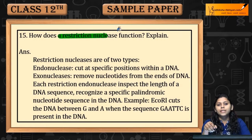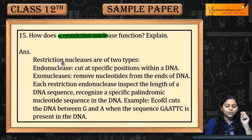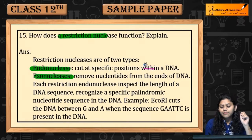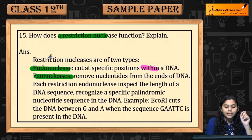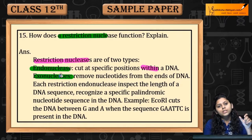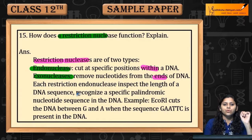How does a restriction nuclease function? Restriction nucleases are two types: endonuclease and exonuclease. Endo means specific within a DNA — ये specific positions को cut करते हैं, restriction nucleases जो specific position of DNA पर cut करते हैं. अगर within DNA है then endonuclease, अगर ends हैं DNA के तो exonuclease.